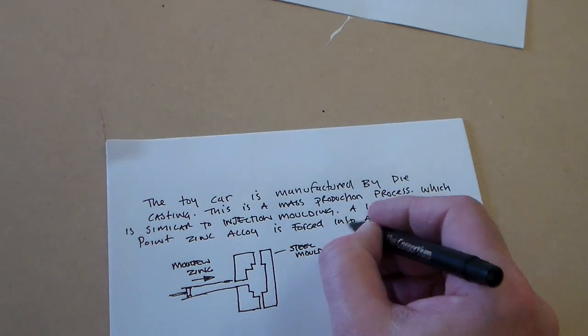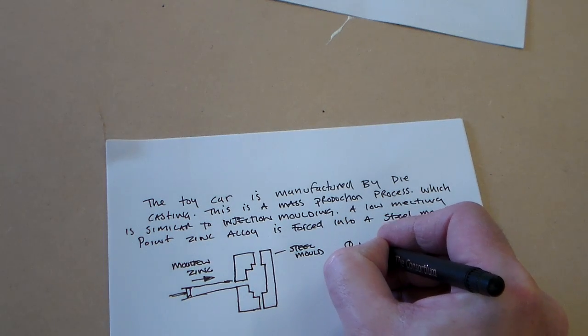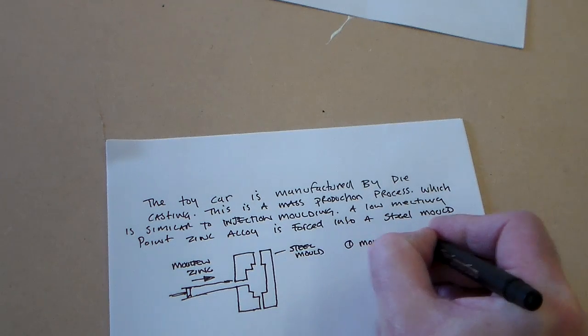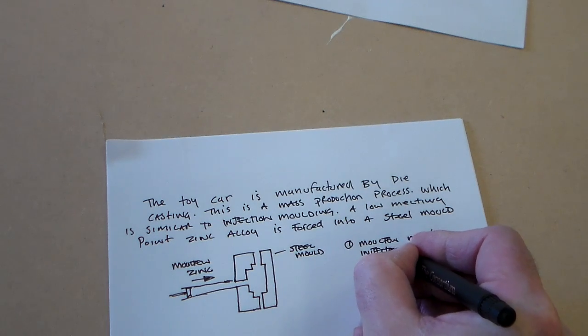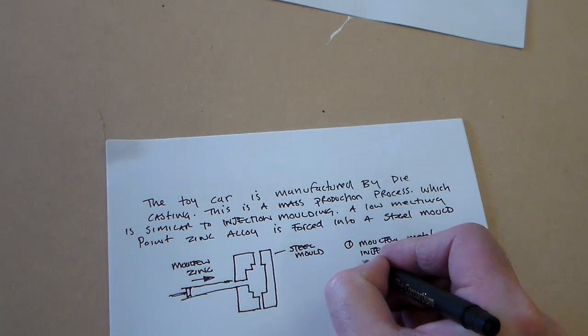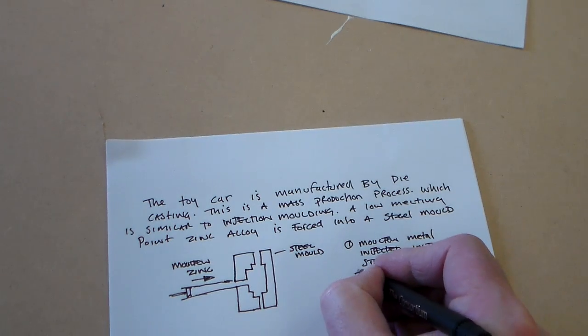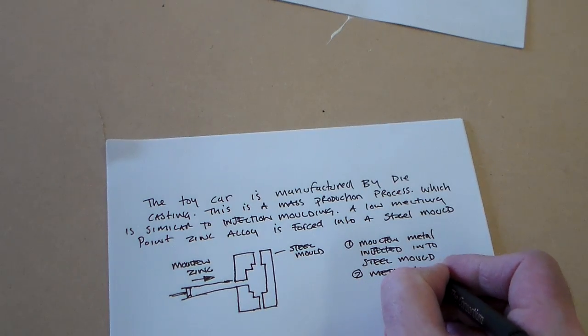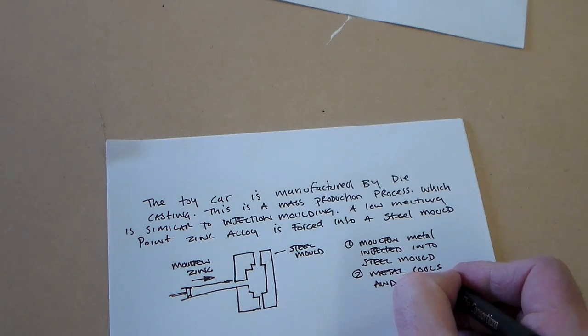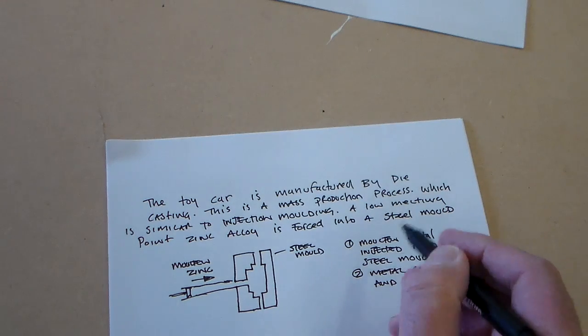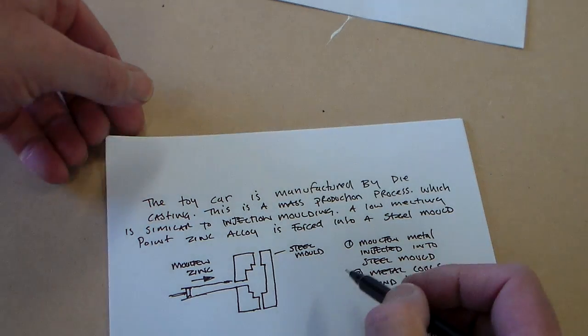You might want to, for example, put some stages here. We could do some stages of manufacture. So one... So I said molten metal is injected into the mold. The metal cools and is ejected. That's very simple.